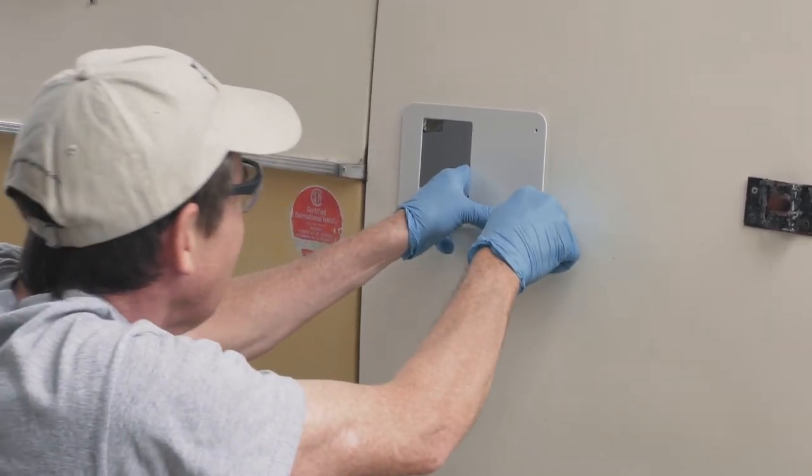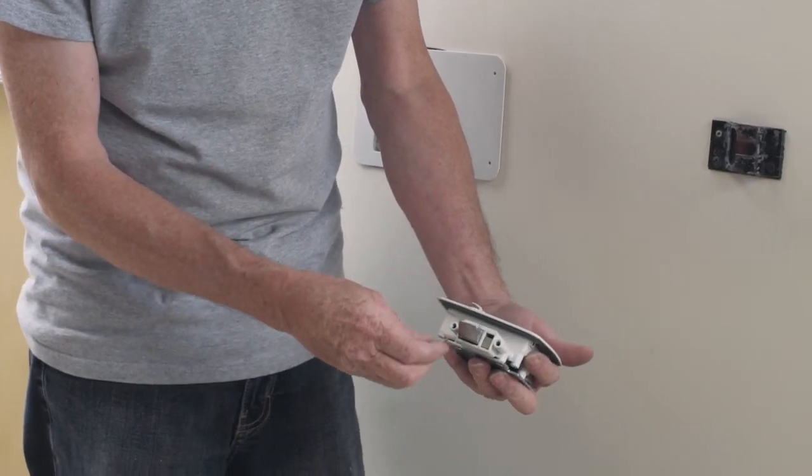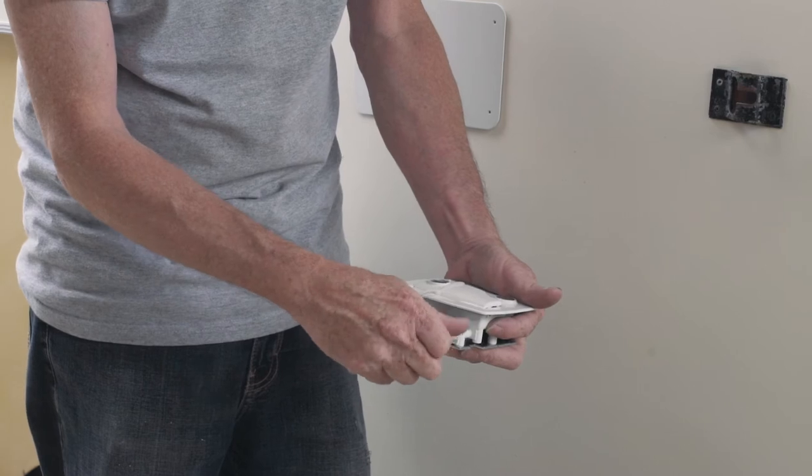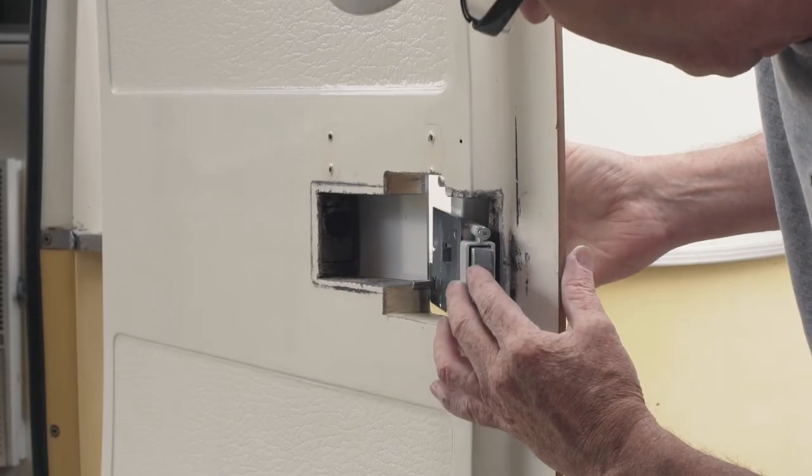While holding the door lock in place, install the inside adapter plate. The inside plate can be held in place by inserting the two flathead machine screws into the latch bolt end of the lock set.